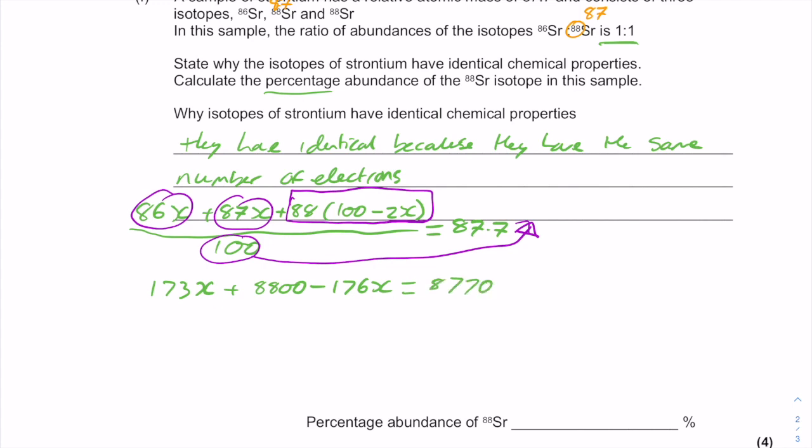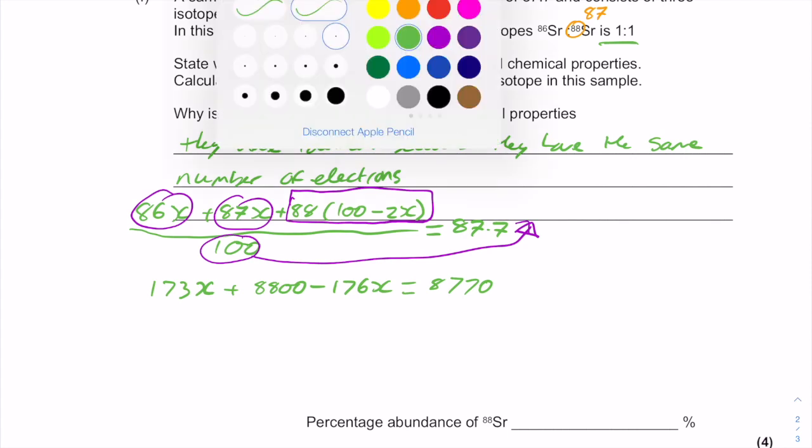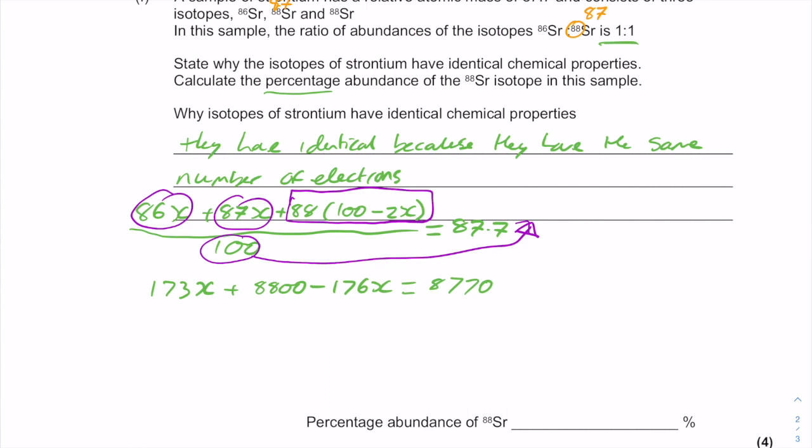Okay, so once I've done that, I'm going to look now at the next bit where I'm going to take the 173x and I'm going to take that with the 176x to end up with minus 3x. And I'm going to take the 8800 and the 8770 and I'm going to combine those two together as well. To do that, I'm going to bring the 8770 over this side and I'm going to bring the product of these two onto this side.